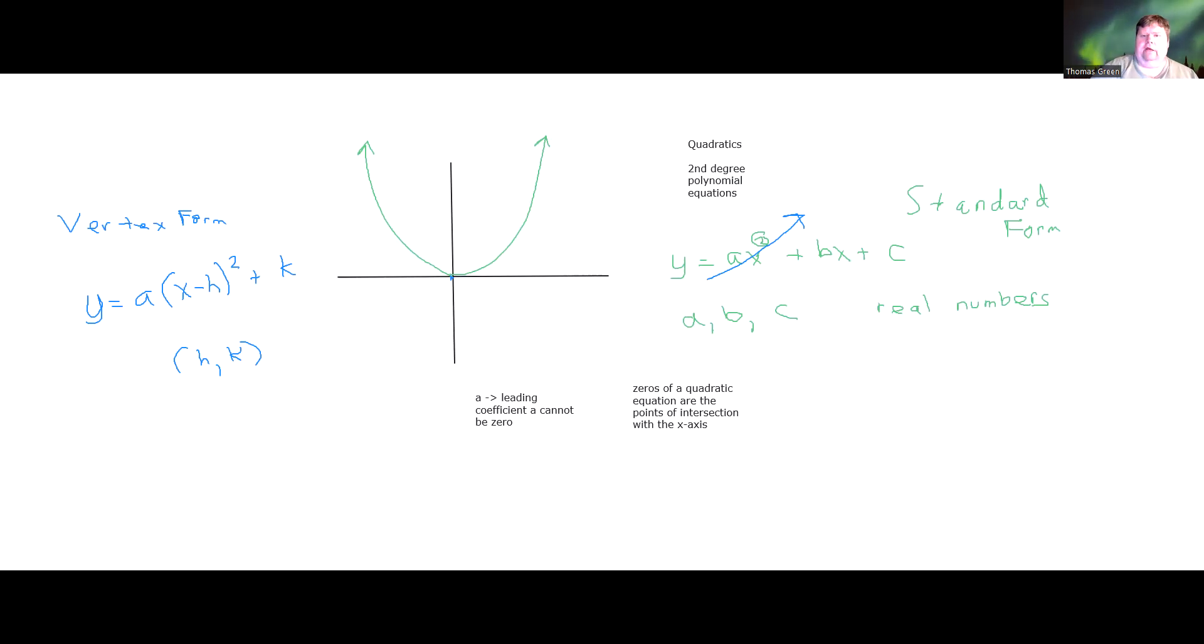And for every quadratic equation, there are one of three possible outcomes for the number of zeros. The first outcome is you have one point of intersection, such as what you see here in the graphic I've drawn.